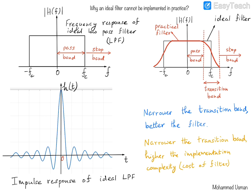The transition band has an effect on the complexity of the filter and also has an implication on the quality of the filter itself. The narrower the transition band, the better the filtering characteristics of the filter. However, the narrower the transition band, the more complex its implementation becomes, and hence its cost as well. So a narrow transition band implies that the implementation complexity and cost of the filter is going to be high.